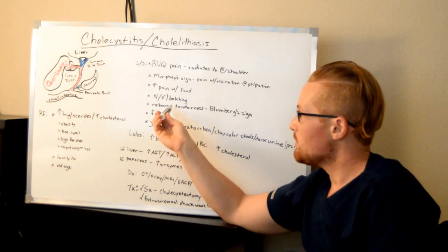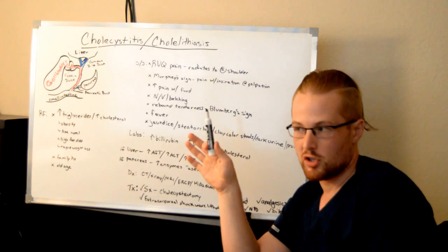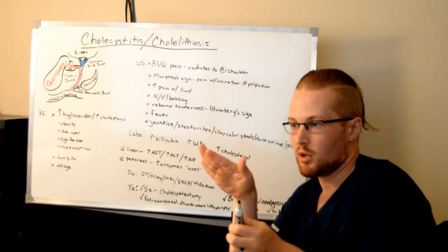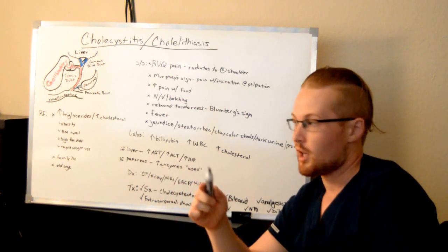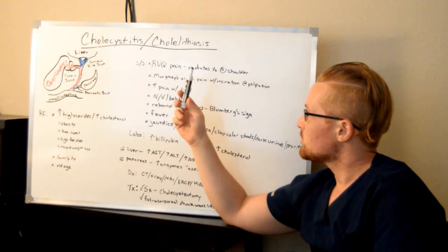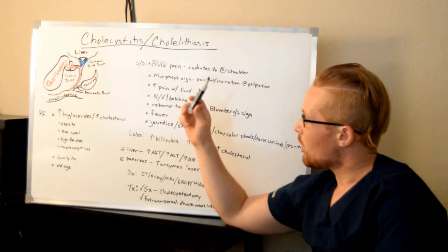They'll also have rebound tenderness, it's called the Bloomberg sign. And this is to be done only by physicians just because if it's swollen up you don't want a nurse coming in and you accidentally pop it and then you're liable for it. Also you have the Murphy sign which is another sign that the doctors will use. So Bloomberg's and Murphy's for the gallbladder.